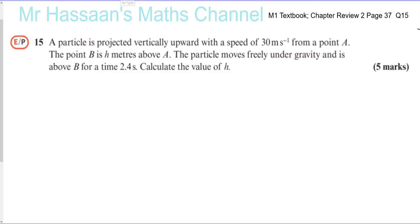So you have a situation where you have something that's projected from a point A. We'll call that our origin point. And it's projected upwards with a speed of 30 meters per second, vertically upwards. And it reaches a point B. And it goes above B as well. And that's, let's call it B there, that's H meters.